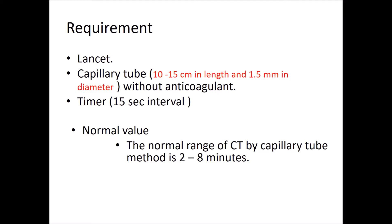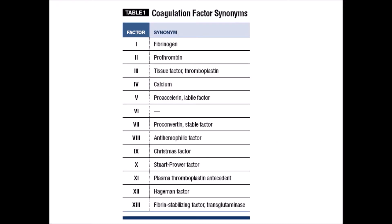The normal range of clotting time by capillary tube method is 2 to 8 minutes. When we talk about determination of clotting time, remember certain things. First, the definition of clotting time. There are 13 coagulation factors required for hemostasis, and depending upon the examiner, you may be asked about specific factors. Factor 1 is fibrin, 2 is prothrombin, 3 is tissue factor, 4 is calcium, 5 is labile factor, 6 is unknown, 7 is stable factor, and 8 is anti-haemophilic factor.